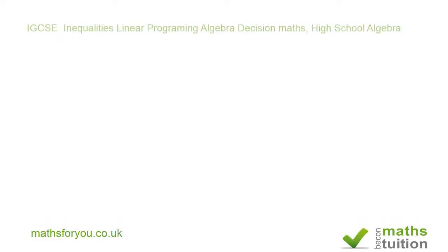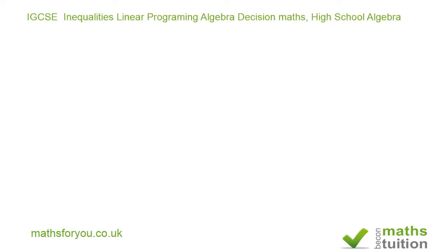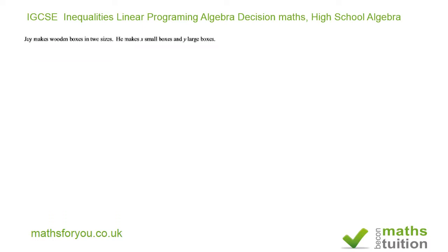Hello and welcome to this IGCSE revision exercise on inequalities. In this case we're looking at linear programming, and therefore suitable for decision mathematics. The problem says J makes wooden boxes in two sizes. He makes x small boxes and y large boxes. We need to write down four inequalities in x or y to show the given information.